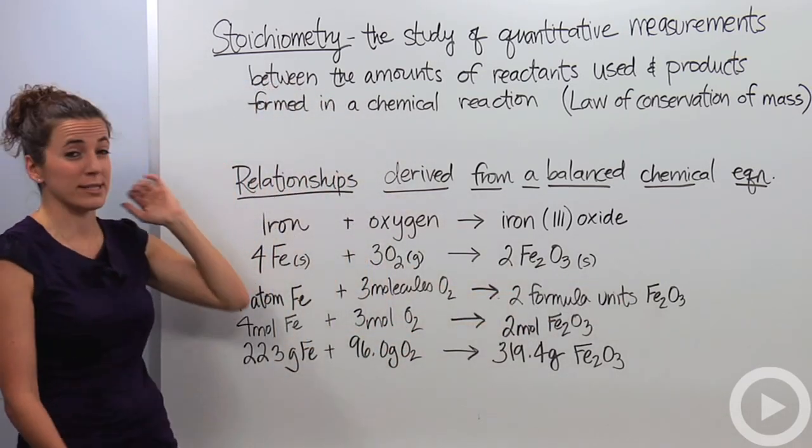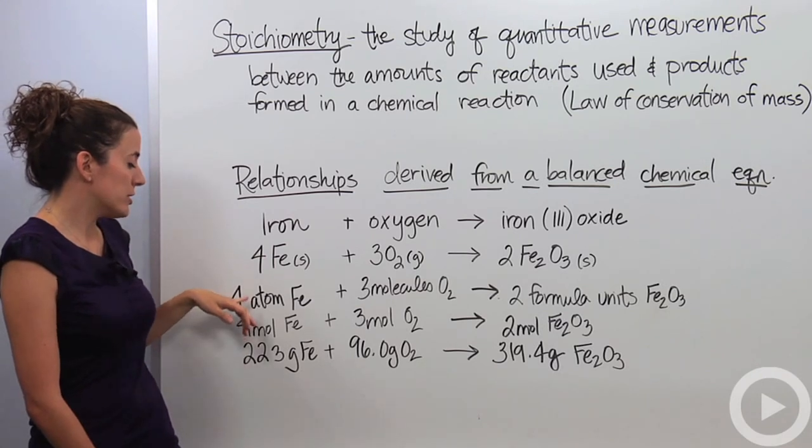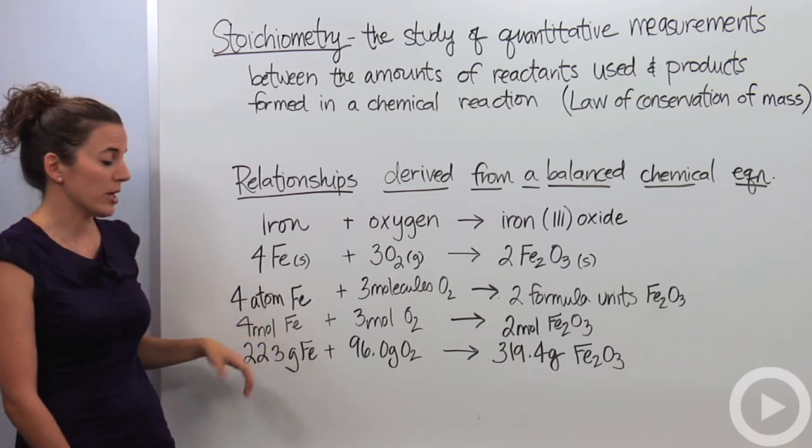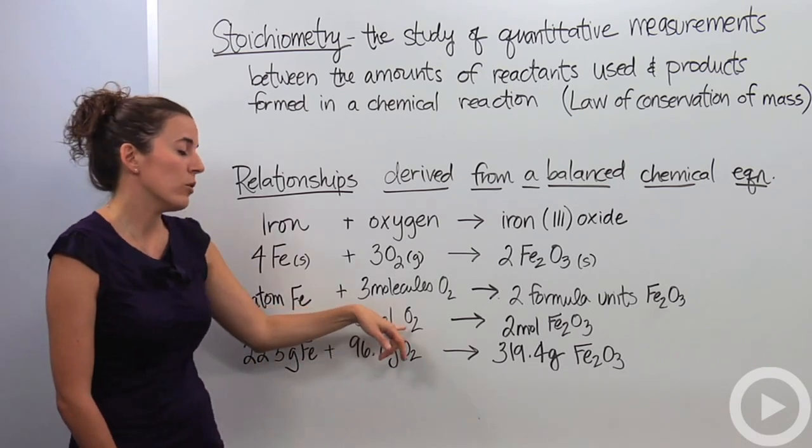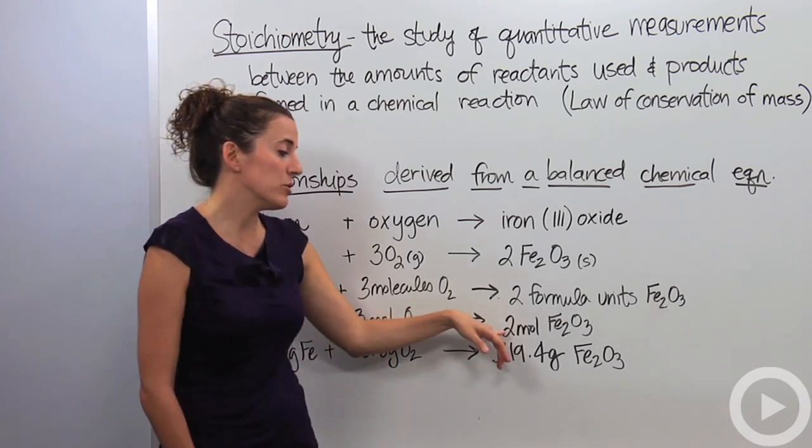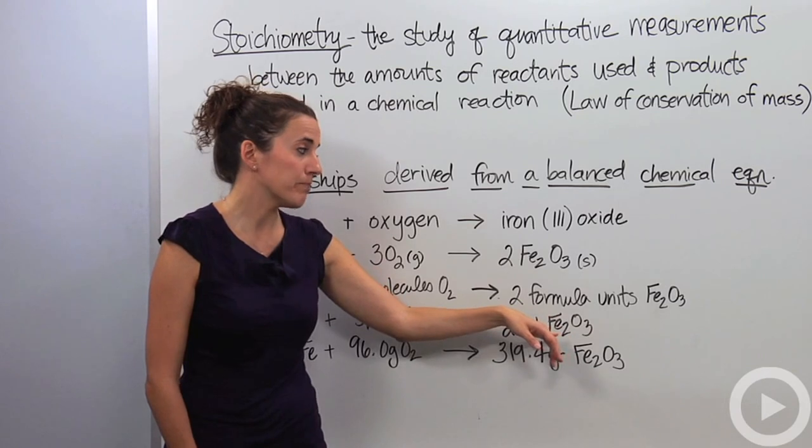Going a bit further, we can change those into moles. These are actually molar relationships, meaning that if we have 4 moles of iron reacting with 3 moles of oxygen gas, we can get 2 moles of iron(III) oxide.